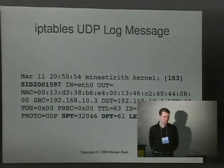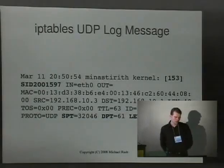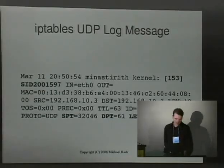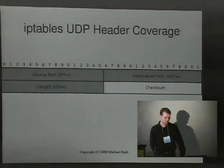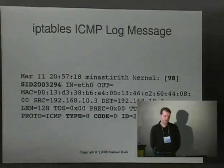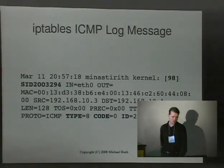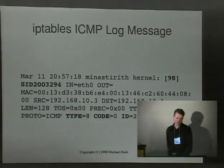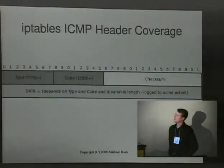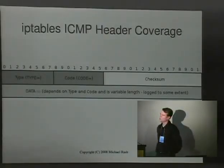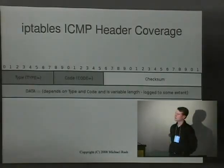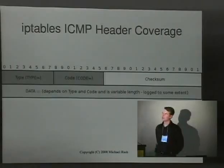For UDP, there aren't any options you can specify on an IP tables command line to influence how IP tables logs the UDP header — you always get just source/destination ports and the length value. For ICMP, a sample message shows ICMP type 8 code 0 — that's an ICMP echo request — along with the ICMP ID value and sequence value. The log target logs ICMP data slightly differently depending on the ICMP type and code values.